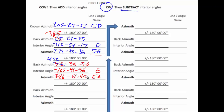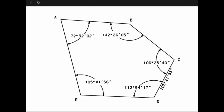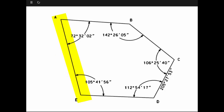Let's ask one more time: is this reasonable? Well, line EA on the figure is just a little bit west of north, so its azimuth should be between 270 and 360 — and because it's just a little bit west of north, it should be closer to 360. Our result was 346 51 40, so indeed this is a reasonable result.